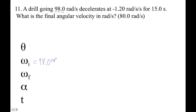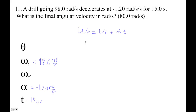We have 98.0 radians per second, 15 seconds, and the acceleration is negative 1.20 radians per second squared. We want to find the final angular velocity, so omega final equals 98 plus negative 1.2 times 15. That gives us 98 minus 1.2 times 15, which is exactly 80 radians per second.